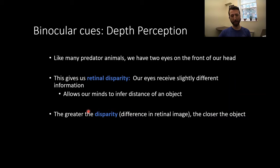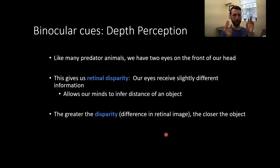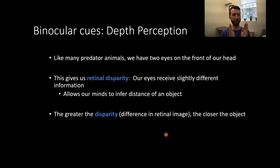The greater the disparity or difference in the retinal image, the closer the object seems to be. You can get a sense of this yourself by taking your finger and putting it between your eyes and looking off into the distance. When something is close, you see two separate images of the finger in front of your face. As it moves further away, the two images get closer and closer together until they converge. The disparity in the retinal image gives you information about how close the object is.